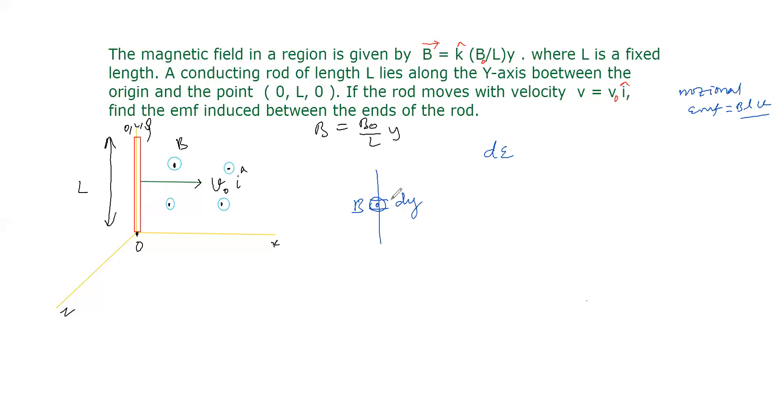Now since this rod is moving in varying magnetic field, the small EMF is dE = B × dy × velocity v. Now B we are substituting: B0/L × y. This y we are substituting, and dy, and this velocity v is there.